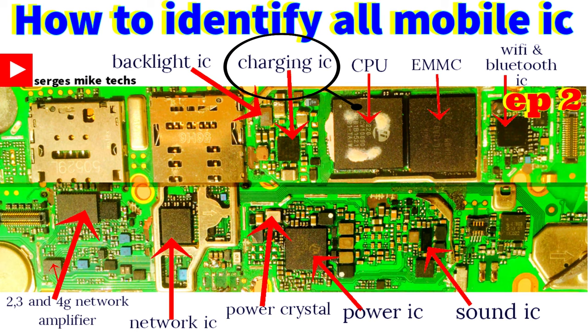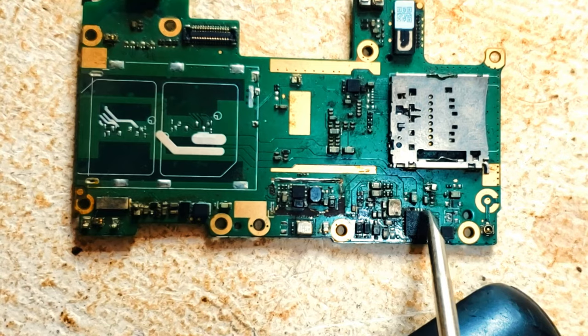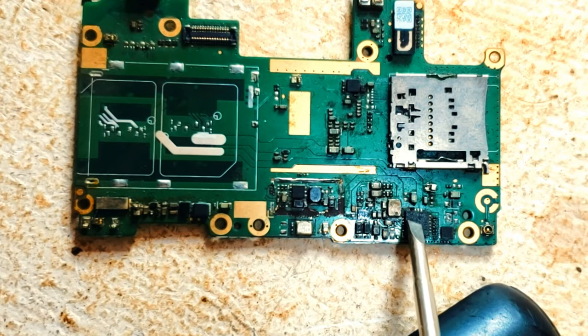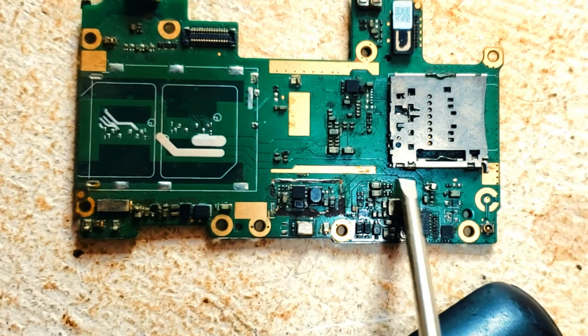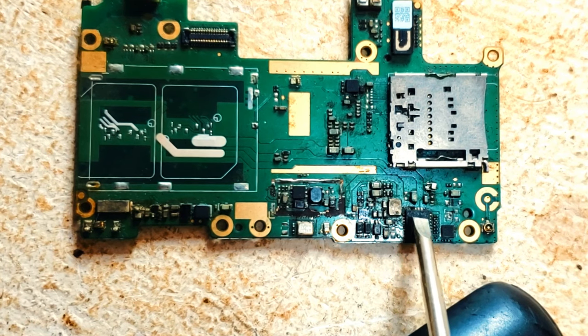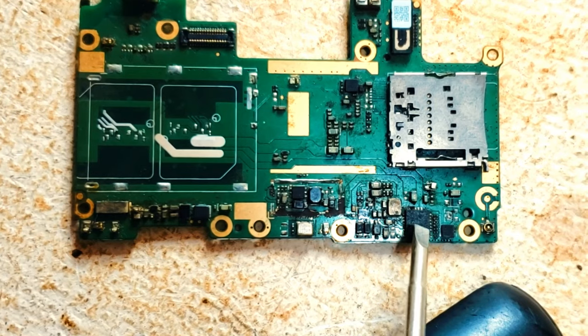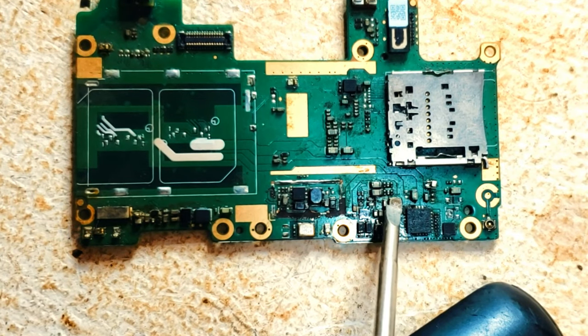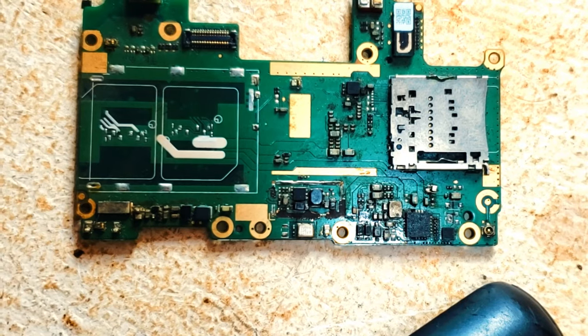Charging IC: This IC is found in the power section of a mobile phone. It receives electrical charges from the phone charger to charge the phone battery, which is passed on to the power IC after passing through the power and zener diode, resistors, and capacitors for further distribution to other parts. If the charging IC is bad, the phone will not charge properly or may not even charge at all.